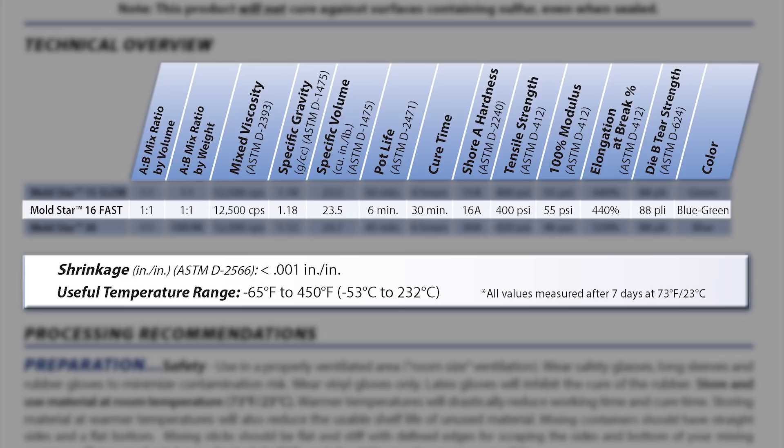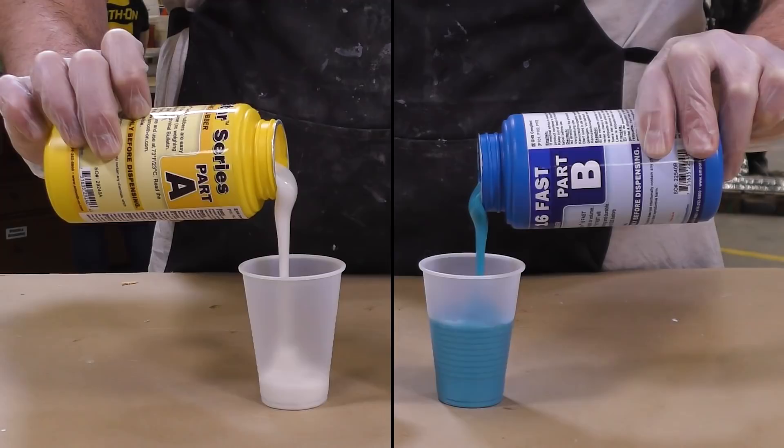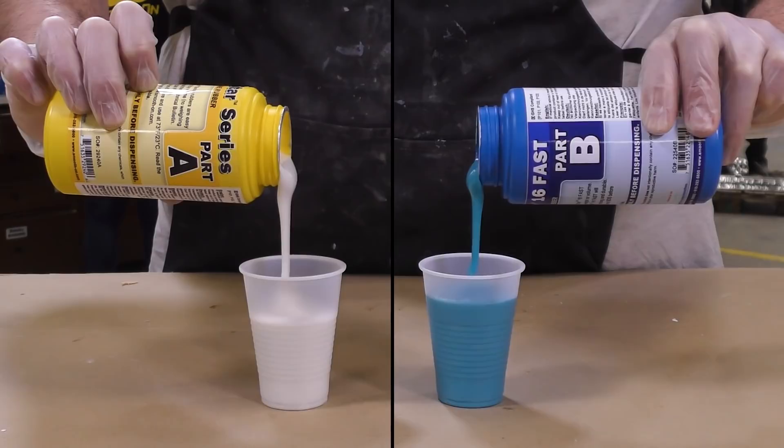Before we start mixing the material, it's really important to follow the instructions, and instructions call for pre-mixing the A and B separately before dispensing. Since this material is a one-to-one mix ratio by volume, we can simply set up our dispensing cups and pour equal amounts.